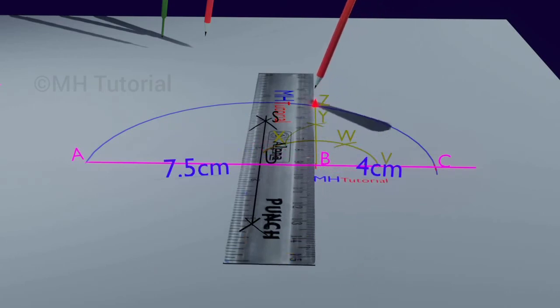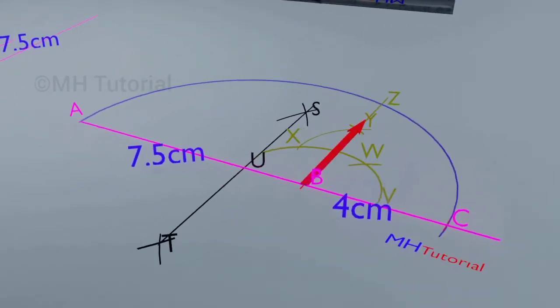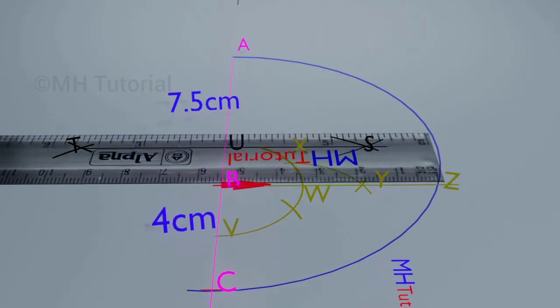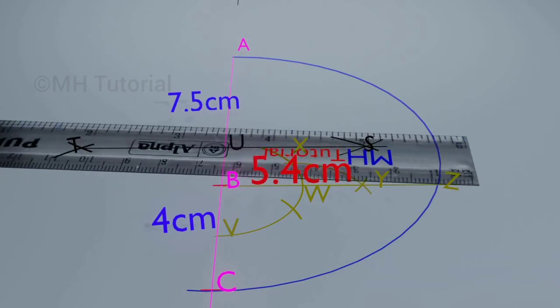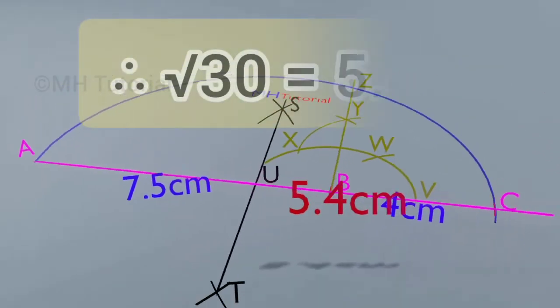So BZ would be the square root of 30. Using a simple centimeter scale, the length of BZ is measured and it comes out to be 5.4 centimeters. So the square root of 30 is 5.4.